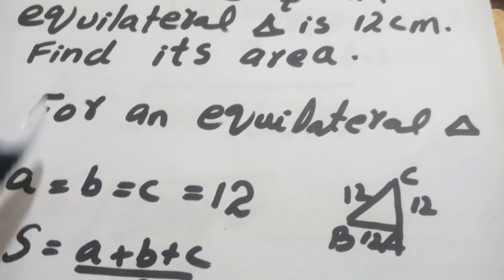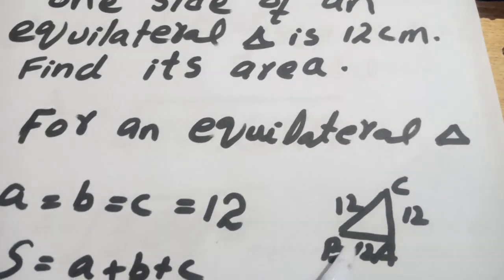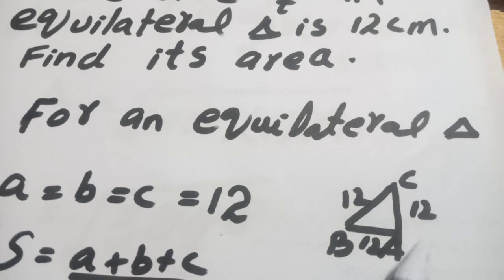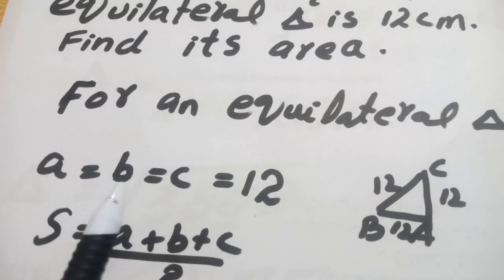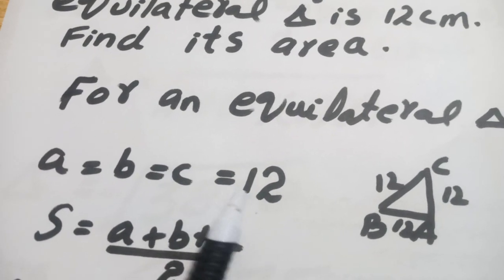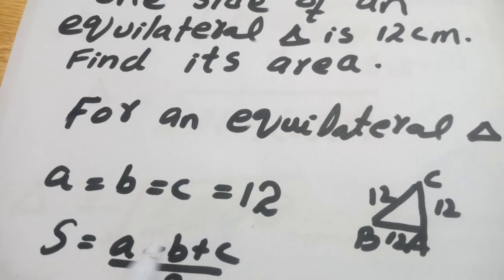So here we have one side is 12 for equilateral triangle. So we have a equals b and b is equal to c which is equal to 12. So equilateral triangle.